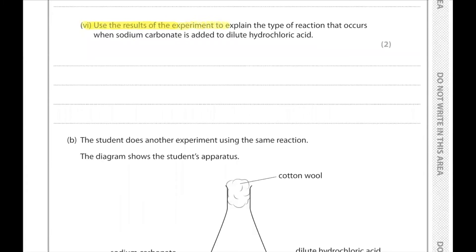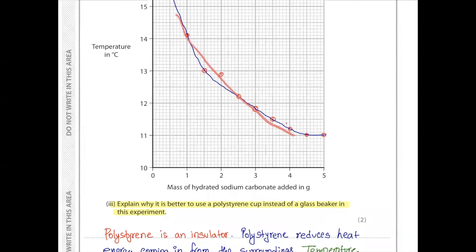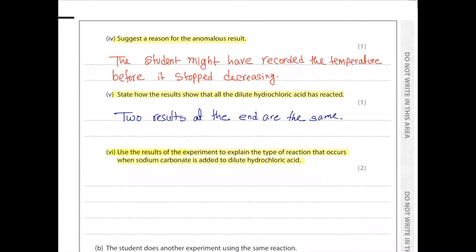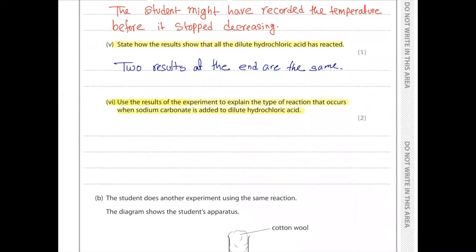Question 9, Part B4. Use the results of the experiment to explain the type of reaction that occurs when sodium carbonate is added to dilute hydrochloric acid. When sodium carbonate is added to dilute hydrochloric acid, there is a general decrease in temperature. A decrease in temperature occurs in an endothermic reaction. So this reaction is endothermic — it takes in heat from the surroundings, as shown by the temperature decrease of the reaction mixture.